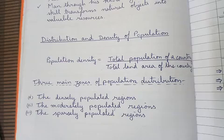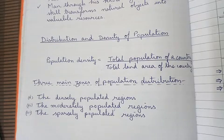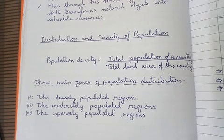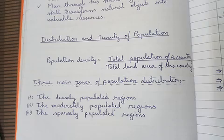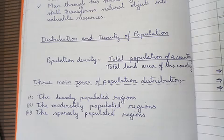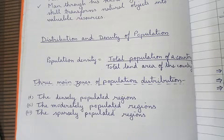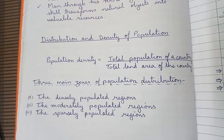Why is the population density so high here? There are so many factors. These countries are highly industrialized and commercially very advanced. Because of this, at present you will find a large number of people from Asia — from India, Pakistan, Bangladesh — living in UK, Britain, France, Spain, and Italy. Why have these people migrated and settled there? Because these countries are highly industrialized and commercially very advanced.